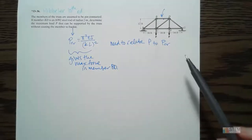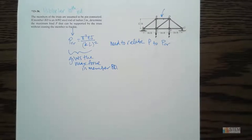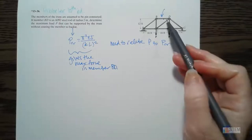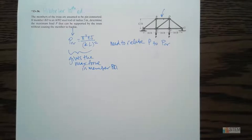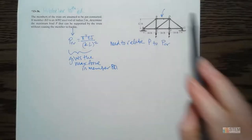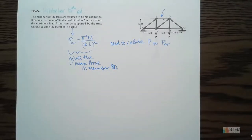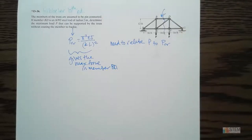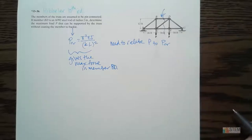We need to relate P to P_CR, because P_CR gives the max force we can have in member BD. You could also apply this to other members and figure out what P value you'd have for those as well, but we're just going to focus on BD. So first I need to know the internal force in member BD — what can we do to find that?